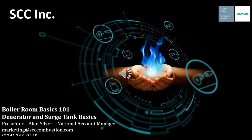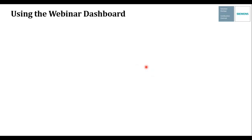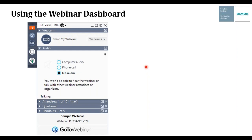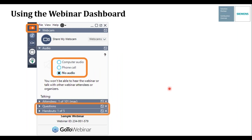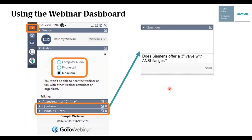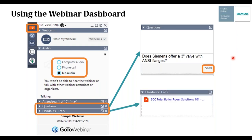Let's do a little housekeeping. When you sign in, you should have a toolbar to your left with a little orange arrow key. Click on that and the larger toolbar will open up — make sure your audio is set to computer audio so you can hear me. There's also a questions bar below; click on that, type in your question, and hit send. You can also add your phone number to your question and we'll get back to you via phone. In the handout section, you can download the PowerPoint presentation as well as technical documents for our deaerator and surge tank control panels.